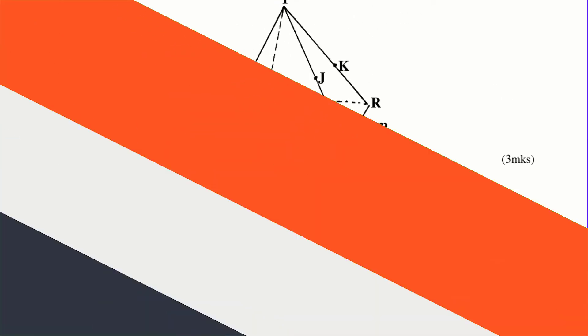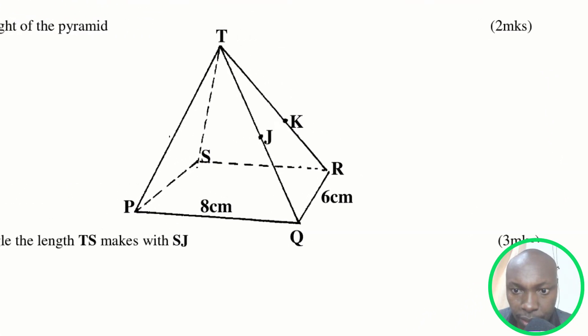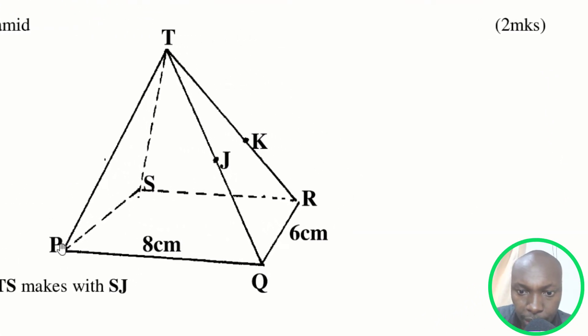Now let's go to the diagram and identify PTS. You can see that plane PTS is here - PTS is there. Then the base is PQRS, so we want to get the angle that plane PTS makes with the base.